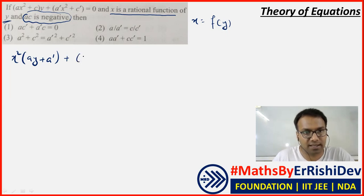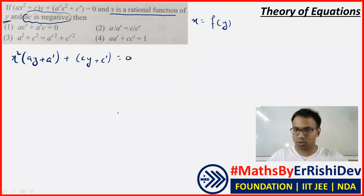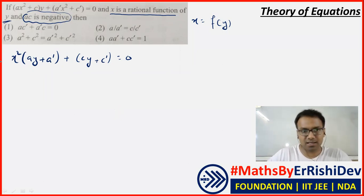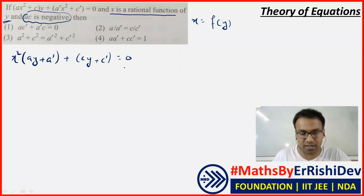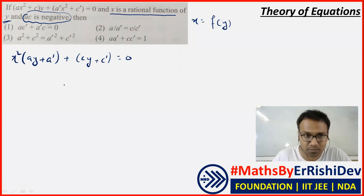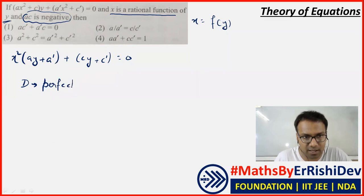This is the equation we are able to frame. Now because x is a rational function, the discriminant here will be a perfect square — that is what I can say about this. The discriminant will be a perfect square.